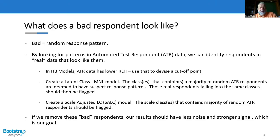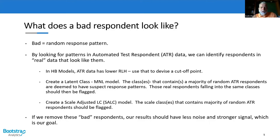The paper is about identifying random respondents in choice experiments, particularly in max diff experiments. They identify a bad respondent as someone who's answering the survey randomly. Two of the methods they use to identify random respondents involve what they call automated test respondents — robots programmed to answer the survey randomly. In one method, they analyze these robots with HB, look at the fit statistic RLH, and identify a cutoff below which they're more likely to find random respondents than good valid human respondents.